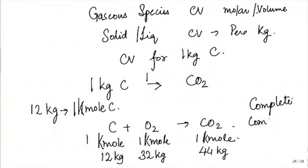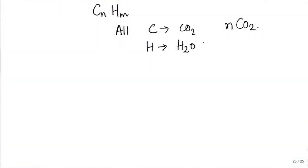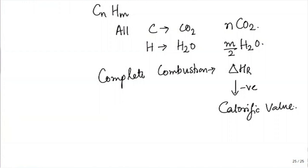Complete combustion means: if I have a hydrocarbon CnHm, all C is converted to CO2 — so Cn forms N×CO2 — and all H forms H2O, so MH gives M/2 H2O. Only once I have complete combustion do I calculate delta HR, and the negative of that is the calorific value. We do not assign a calorific value if carbon goes to CO; calorific value is defined only for complete combustion.